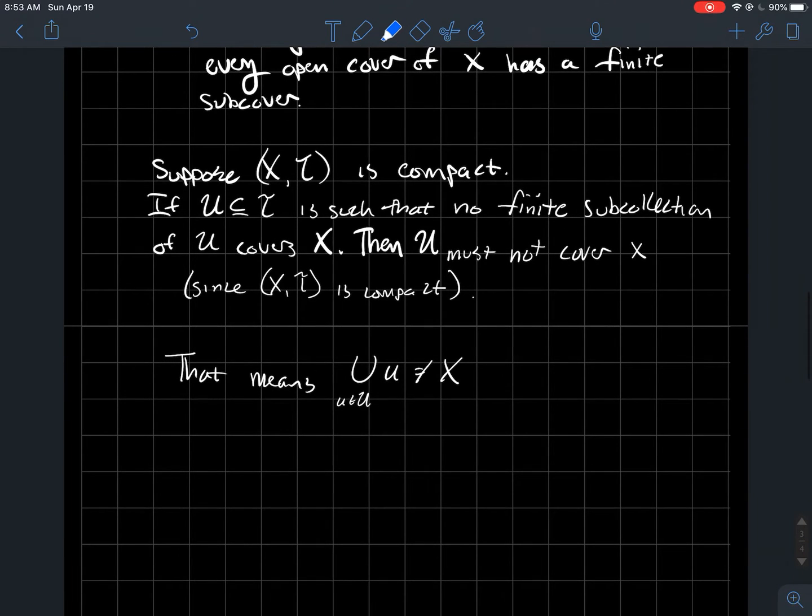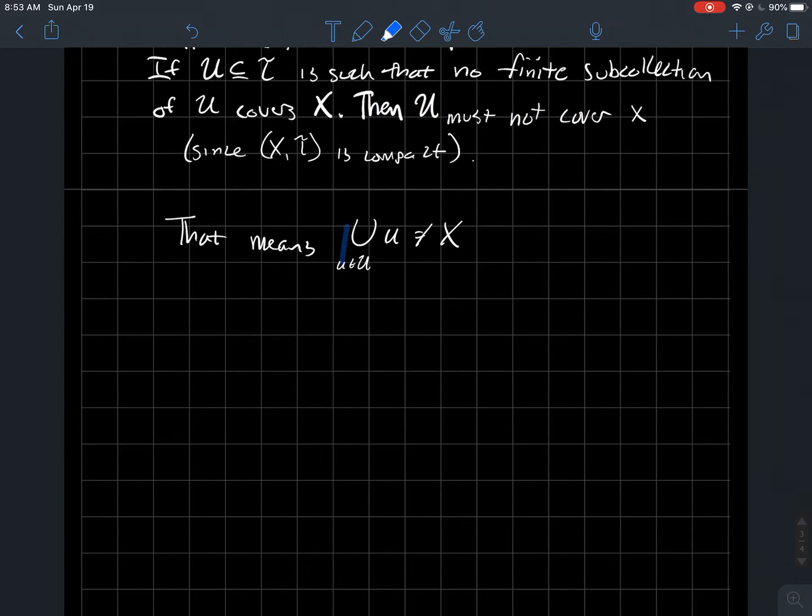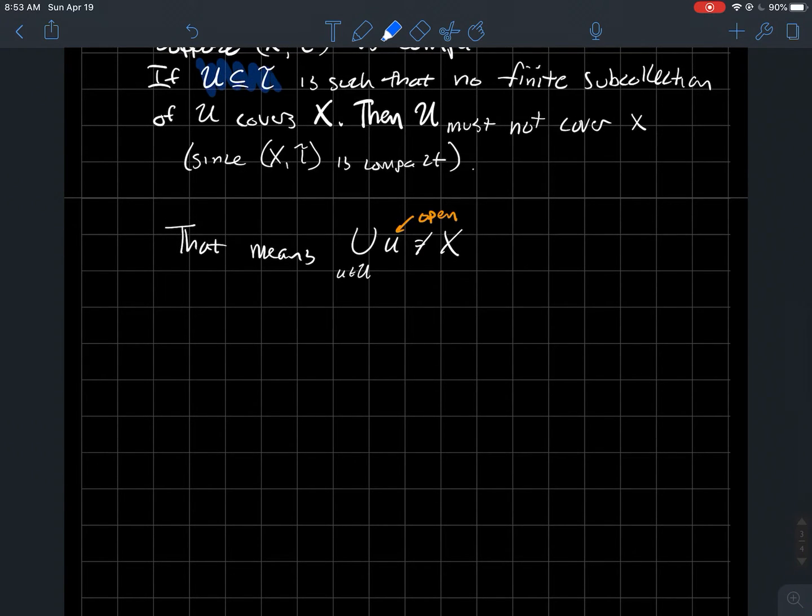If I say that with math words, what does it mean to say fancy U is not a cover of X? It says the union of all things in fancy U doesn't cover X, meaning the union doesn't equal X. Let's take complements of both sides. Remember, U is a collection from my topology, so I can describe all its elements with the word open. All these U's are open.